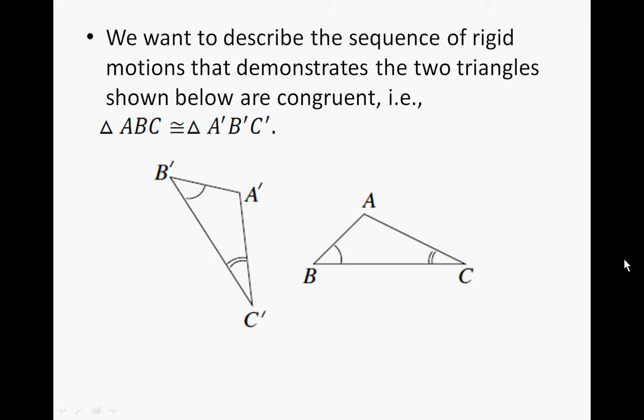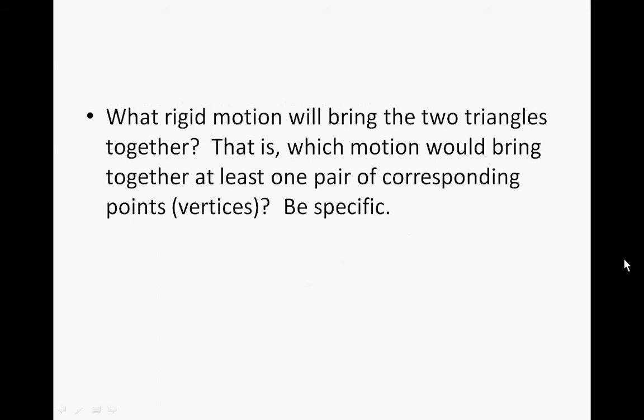We want to describe the sequence of rigid motions that demonstrates the two triangles shown below are congruent. For example, triangle ABC is congruent to triangle A prime, B prime, C prime. So what rigid motion will bring the two triangles together? That is, which motion would bring together at least one pair of corresponding points — vertices — be specific.